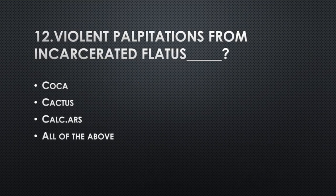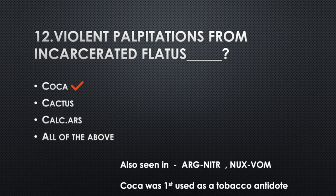Violent palpitations from incarcerated flatus — Option A: Coca, Option B: Cactus, Option C: Calcarea, Option D: All of the above. Answer: Option A, Coca. This symptom is also seen in Argentum nitricum and Nux vomica. Coca was first used as a tobacco antidote.